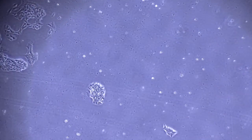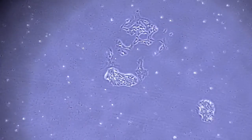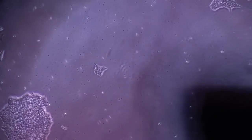Briefly, IPSC colonies are formed by densely packed cells with defined borders. At a higher magnification, it is clear that these cells present a high nucleus to cytoplasmic ratio and have a prominent nucleolus.